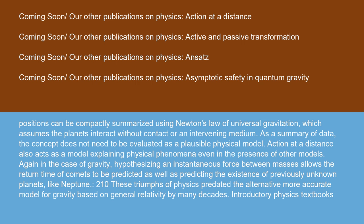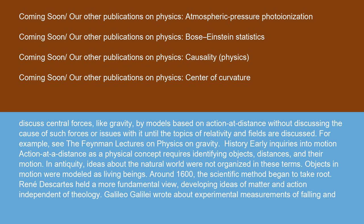Action at a distance also acts as a model explaining physical phenomena even in the presence of other models. Again, in the case of gravity, hypothesizing an instantaneous force between masses allows the return time of comets to be predicted as well as predicting the existence of previously unknown planets, like Neptune. These triumphs of physics predated the alternative more accurate model for gravity based on general relativity by many decades. Introductory physics textbooks discuss central forces like gravity by models based on action at distance without discussing the cause of such forces or issues with it until the topics of relativity and fields are discussed. For example, see the Feynman lectures on physics on gravity.